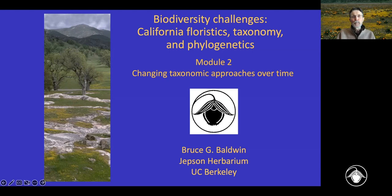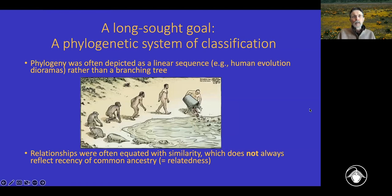The last module ended with how a phylogenetic taxonomy was long a goal but wasn't really within grasp until the late 20th century. If we go back and look at traditionally presented phylogenies — not Darwin's, but those that often appear in older literature — phylogeny is often depicted as a linear sequence. A classic example of this is human evolution dioramas, parades of increasingly modern-looking individuals with modern humans in front.